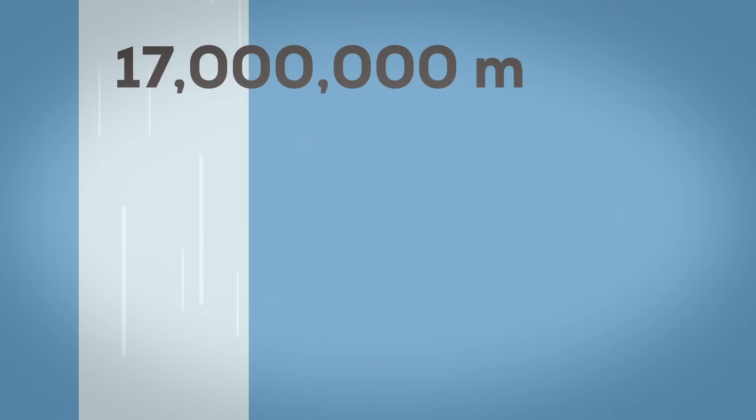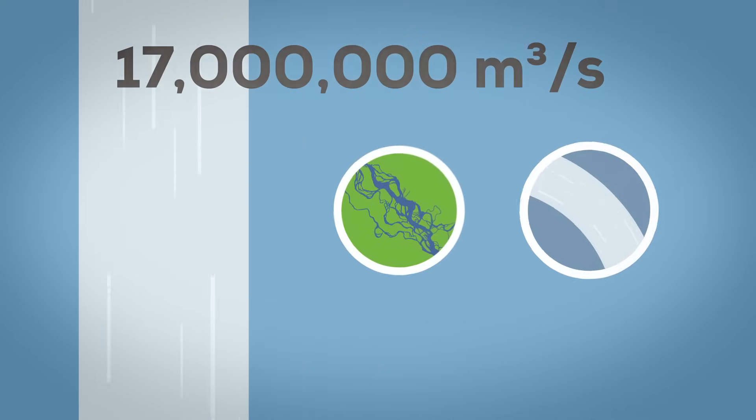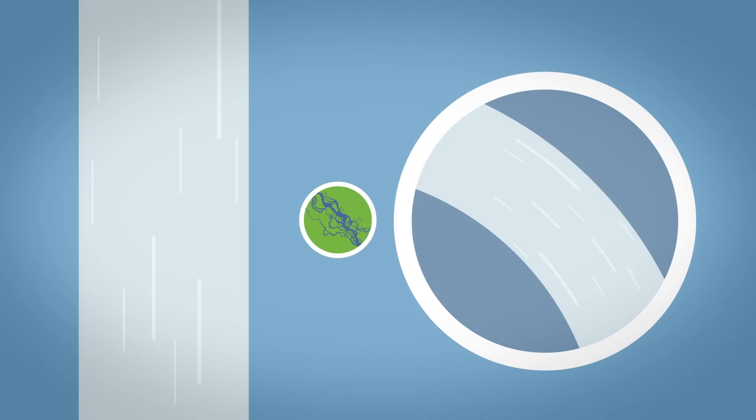There we also find the largest waterfall on Earth, the so-called chimneys. Roughly 15 kilometer wide pillars with water falling up to 4,000 meters. 17 million cubic meters of water per second or roughly 15 times more water than is carried by all the rivers in the world.